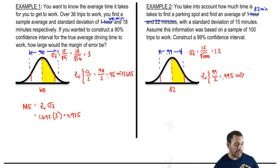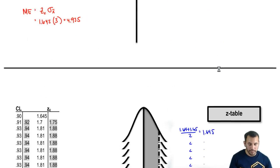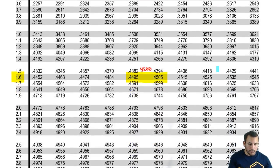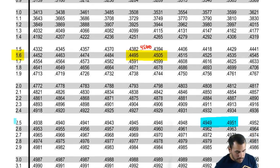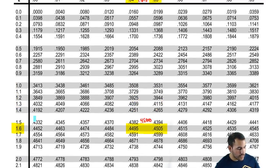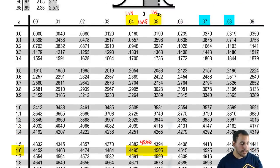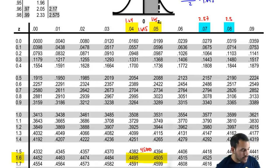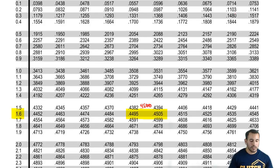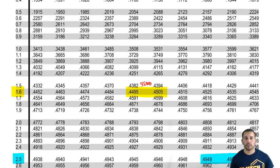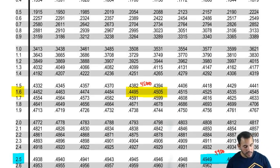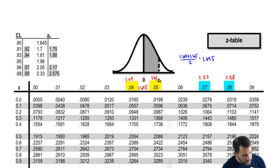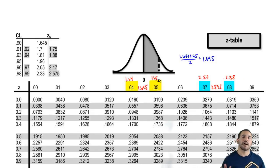We're going to look 0.495 up in our table and find a Z score tied to it. So 0.495 is between 2.57 and 2.58 in the table. Since it's exactly in between — 0.4949 is one below and 0.4950 is one above — we get the average of these two and end up with a midpoint of 2.575. That's our Z tied to that confidence interval.